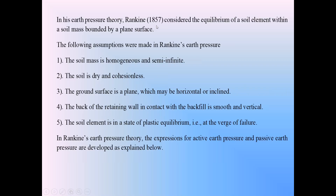In 1857, Rankine proposed the Earth Pressure Theory to find out the magnitudes of active and passive earth pressure acting on the retaining walls. In that theory, Rankine made some assumptions. The first assumption: the soil is homogeneous and semi-infinite — meaning the backfill behind the retaining wall.